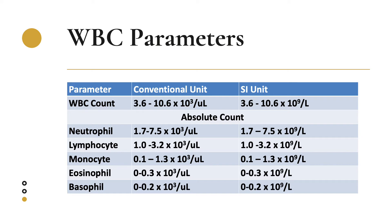For absolute counts: neutrophils at 1.7 to 7.5 times 10 to the third cells per microliter, lymphocytes at 1 to 3.2 times 10 to the third, monocytes at 0.1 to 1.3 times 10 to the third, eosinophils at 0 to 0.3, and basophils at 0 to 0.2 times 10 to the third cells per microliter. In SI units, the values are the same but the unit is 10 to the ninth cells per liter.